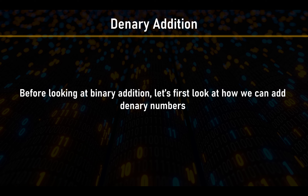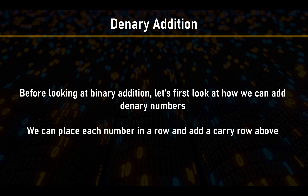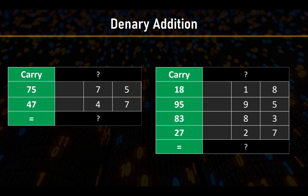Before looking at binary addition, let's recap how we add denary numbers, because it's the same method. For denary, we place each number in a row and add a carry row above. Let's look at 75 plus 47.